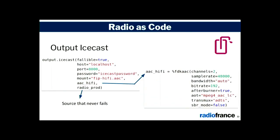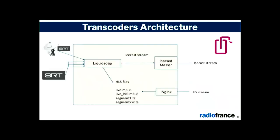Next, we output to IceCast, which is much simpler. We output to localhost, because IceCast master is on the transcoder. We use an encoder to make the AAC stream, still with the same source that never fails.